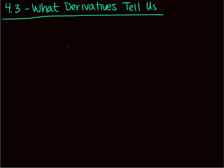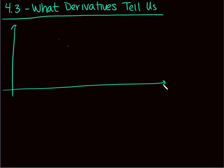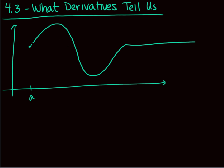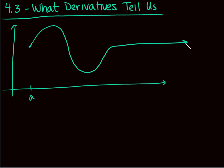This whole section is about the graph of a function. For example, let's put a function in the first quadrant — it doesn't have to be there — and look at a chunk of it. Let's say the function does something like this. This is my function f of x, and our domain is a to infinity. Let's talk about what's happening with this function.